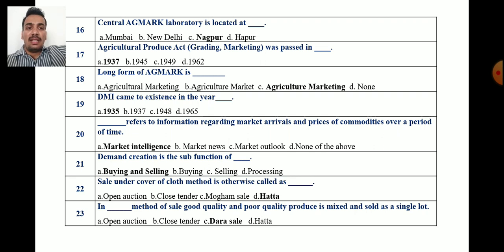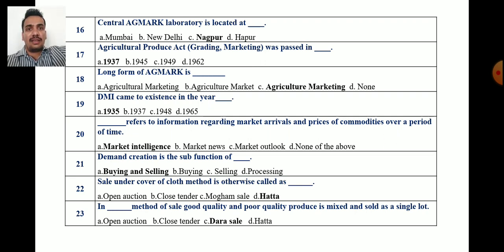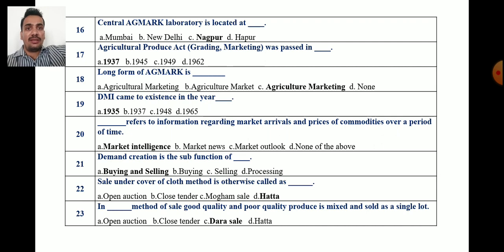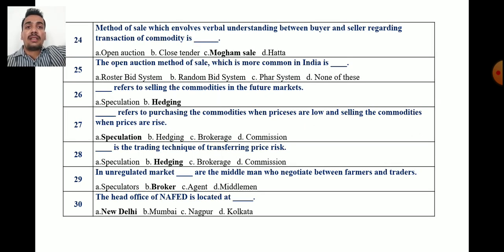Question 23: In the blank method of sale, good quality and poor quality produce is mixed and sold as a single lot. Options are: open auction, close tender, dara sale, or hatta sale. The correct answer is dara sale. In this method, good quality and poor quality produce are mixed together and sold as a single lot. Keep in mind: dara sale is practiced for cumin.